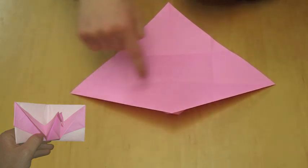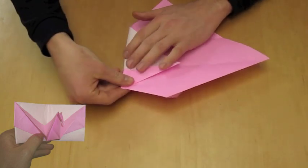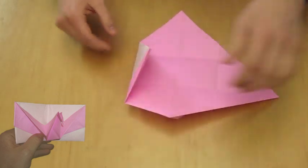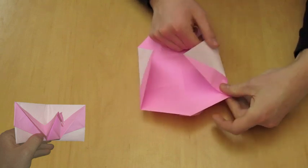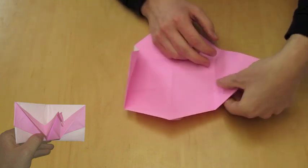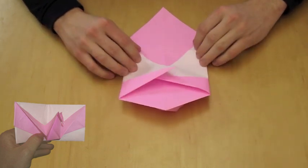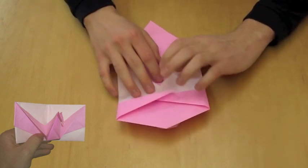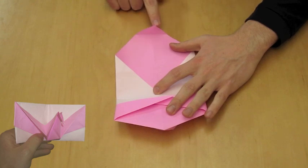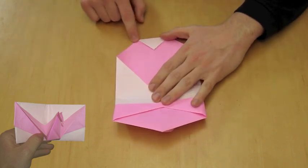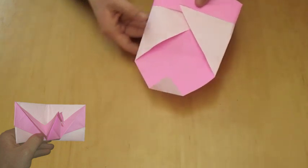Now fold that corner to the center line. There should already be a crease there. Do the same for the other side. Once again, you're folding along the existing crease. Now fold the tip in along the existing crease once again. It should kind of look like a cubic heart now. Here's a quick view of the other side.